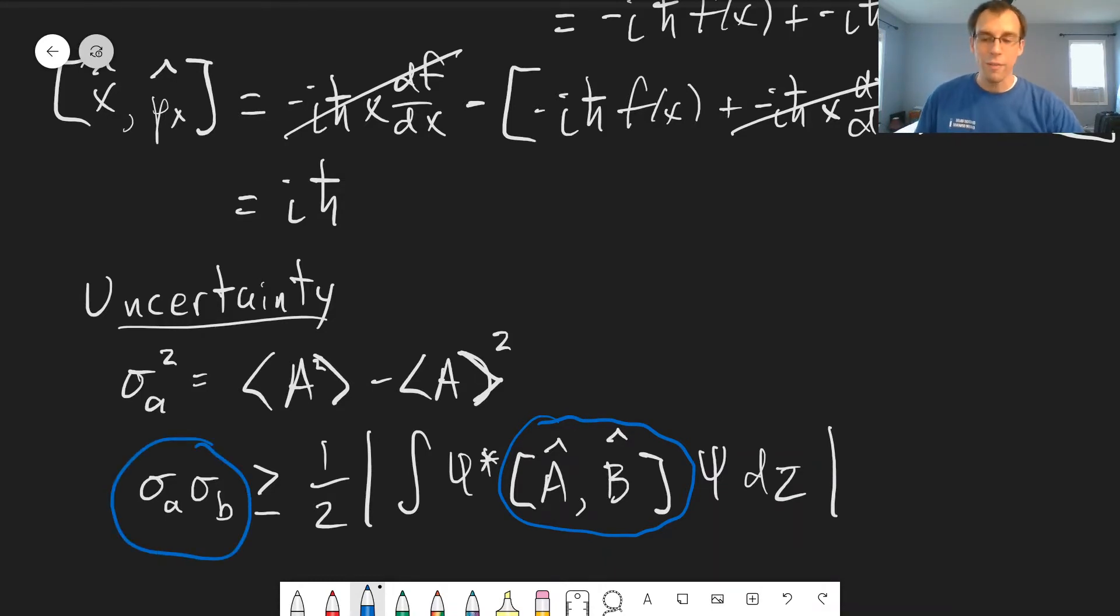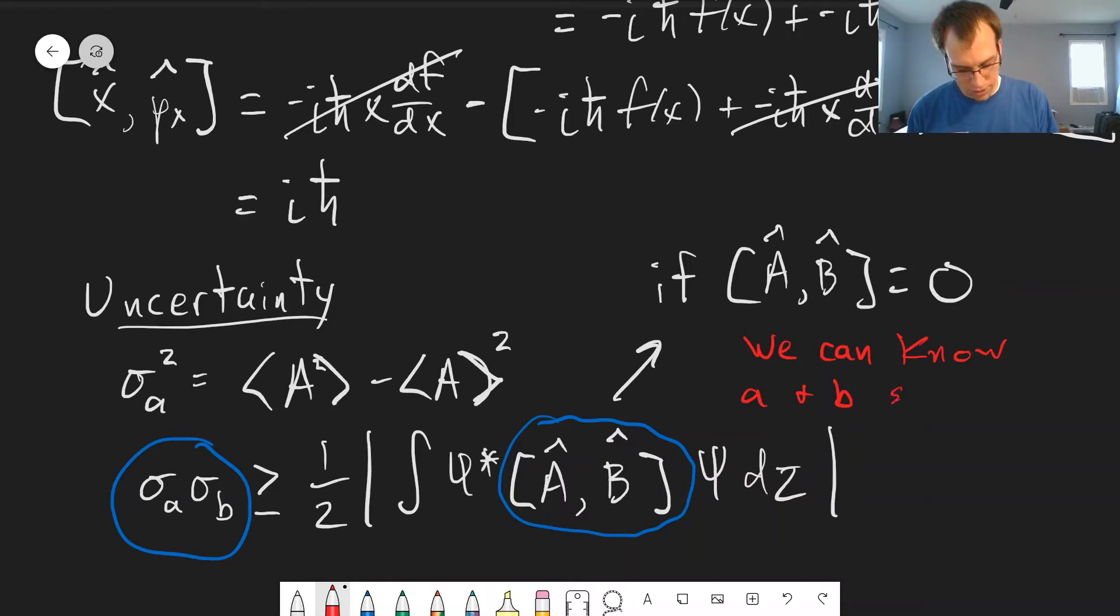The consequence of this is that if this commutator is equal to zero, then the product of the uncertainties can be equal to zero. So if the commutator of a and b equals zero, what that means is we can know the observables a and b simultaneously.